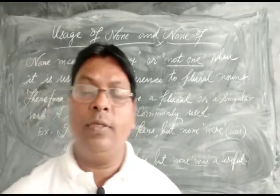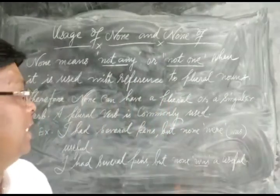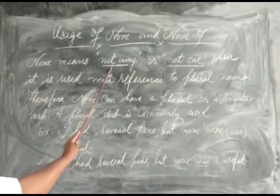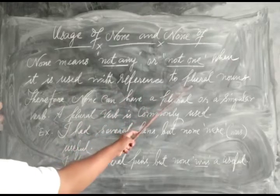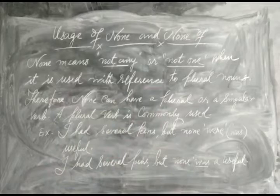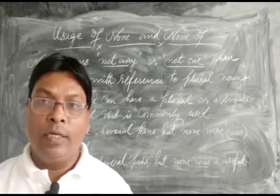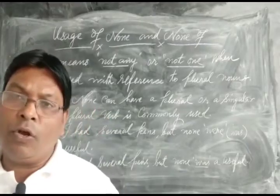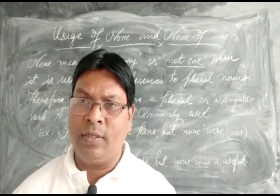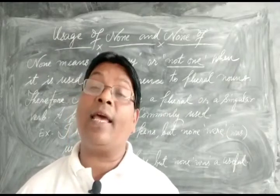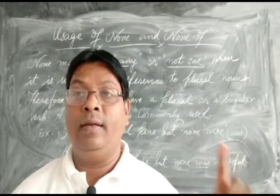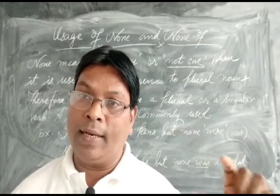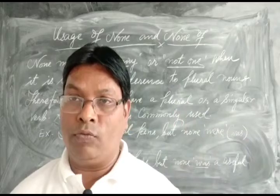So 'none' means 'not any' or 'not one.' When it is used with reference to plural nouns, 'none' can have a plural or a singular verb. A plural verb is commonly used in this sense. So 'none' means not any of the things, not one of the things. Therefore, 'none' can be followed by either a plural verb or a singular verb when used with reference to plural nouns or plural pronouns.